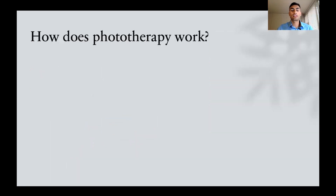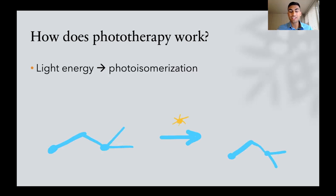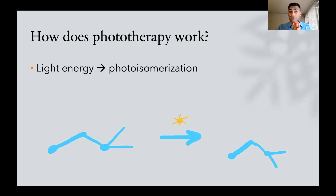So let's get into how phototherapy works. Basically what's happening is that you're using light energy to do something called photoisomerization. This is a very fancy term, but essentially it means we're changing the molecular configuration of the bilirubin — not its chemical composition, only its arrangement in space. When you do that — same chemical composition but different arrangement in space — that forms something called an isomer.